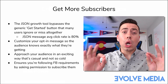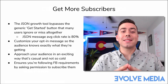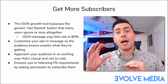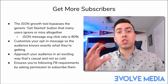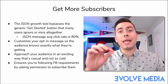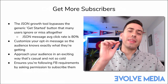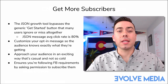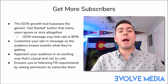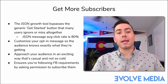The JSON growth tool bypasses that whole 'Get Started' step entirely. The actual average messenger click-through rate is around 80% when using this JSON messenger growth tool, because when someone clicks on the Facebook ad they get an immediate message, and that immediate message has an 80% click-through rate — which is pretty high. You can also customize your opt-in message so the audience knows exactly what they're getting and what happens next.